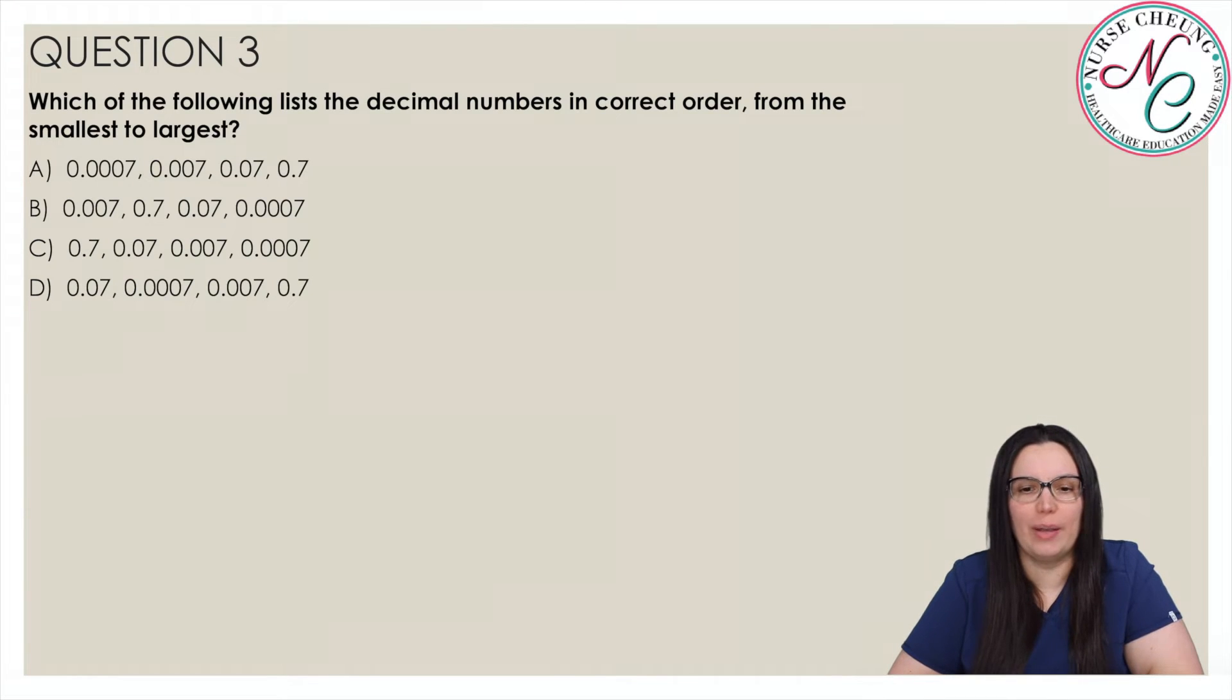Which of the following lists the decimal numbers in the correct order from the largest to the smallest? Is it A, B, C, or D? And the correct answer is A.